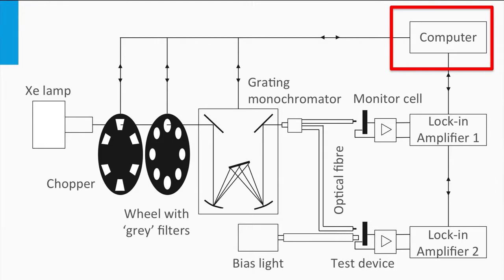The advantage of measuring the short circuit current density using an EQE setup over JV measurements is that the current density measured by the EQE is independent of the spectral shape of the light source used. Secondly, on lab scale the real contact areas of solar cells are not accurately determined. The EQE measurement setup, when using shading masks, is independent of the contact area.